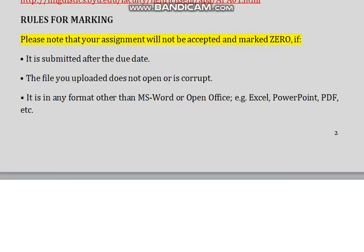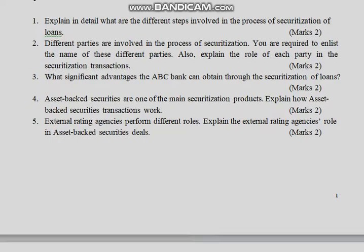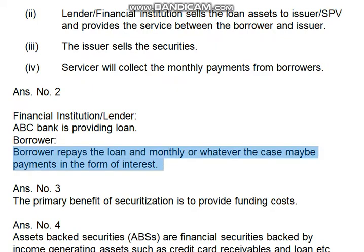Requirement number 2 is about the different parties involved in the process of securitization. The main parties are: number one, the financial institution lender, who provides the loan; and number two, the borrower, who receives the loan and pays back the interest on a monthly or annual basis within a certain period of time.